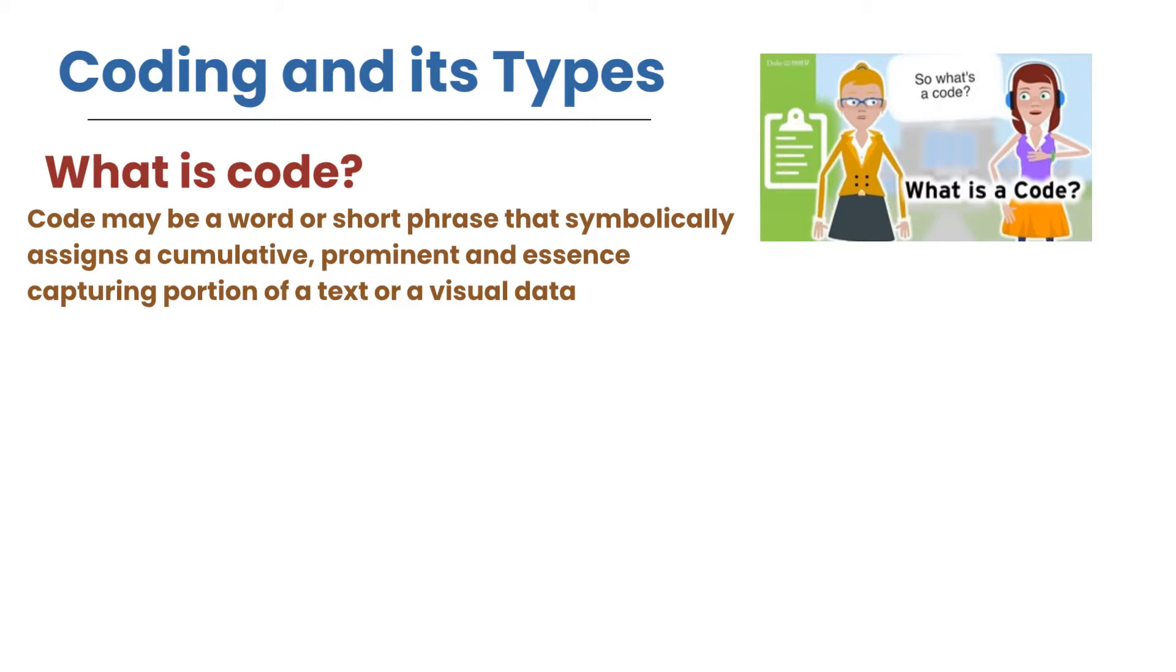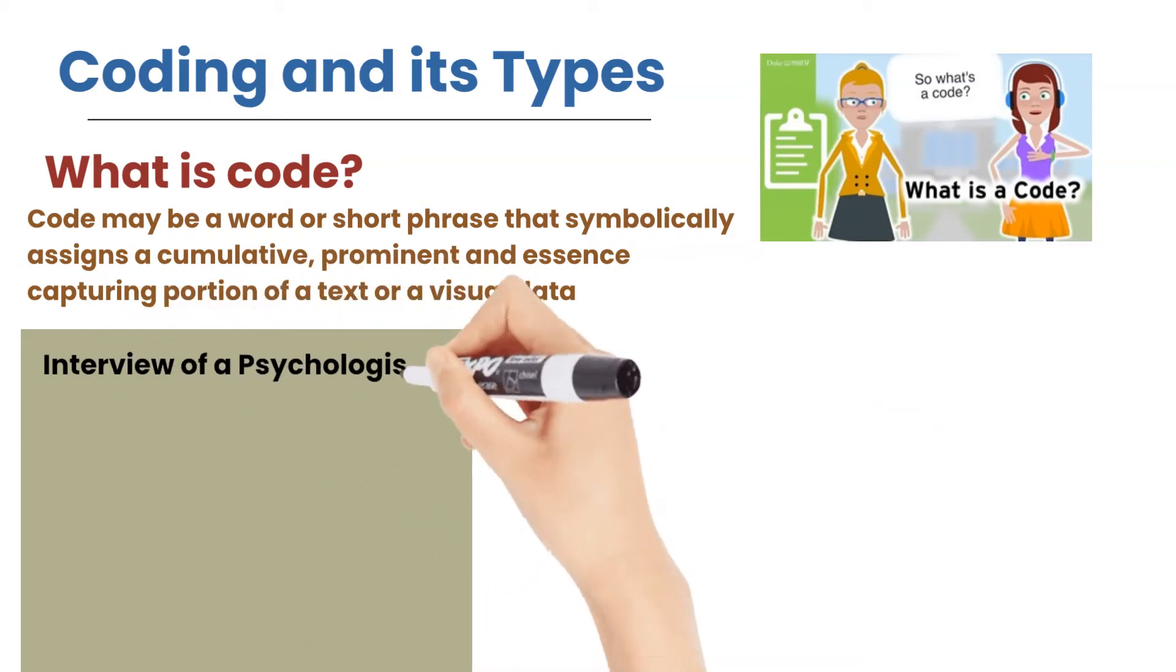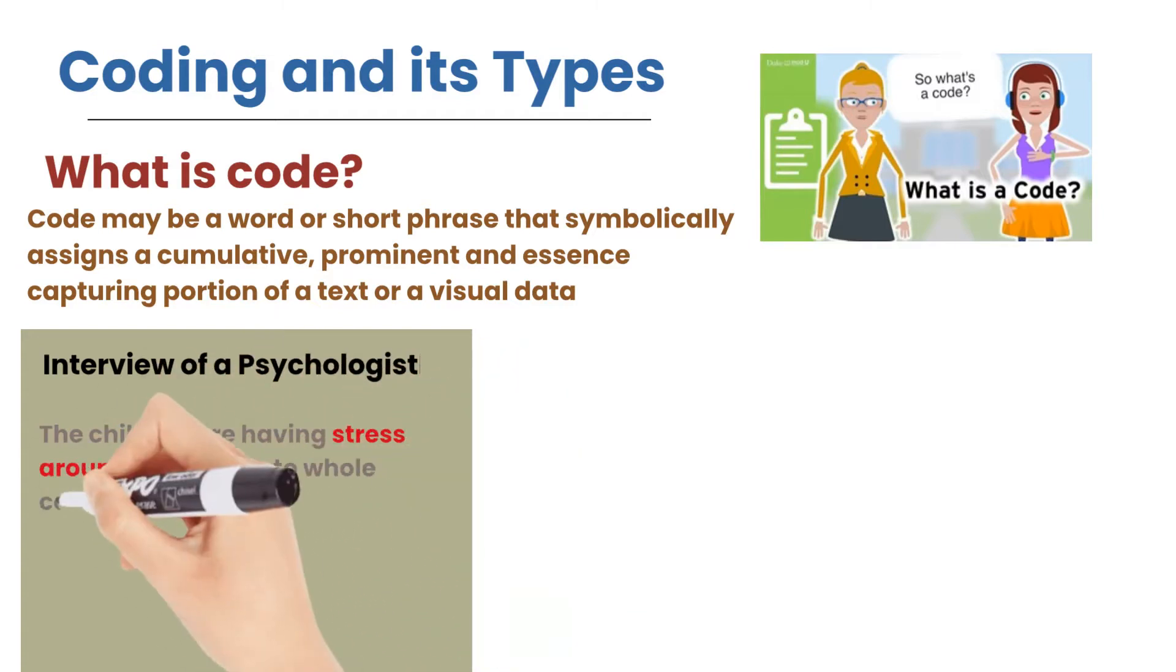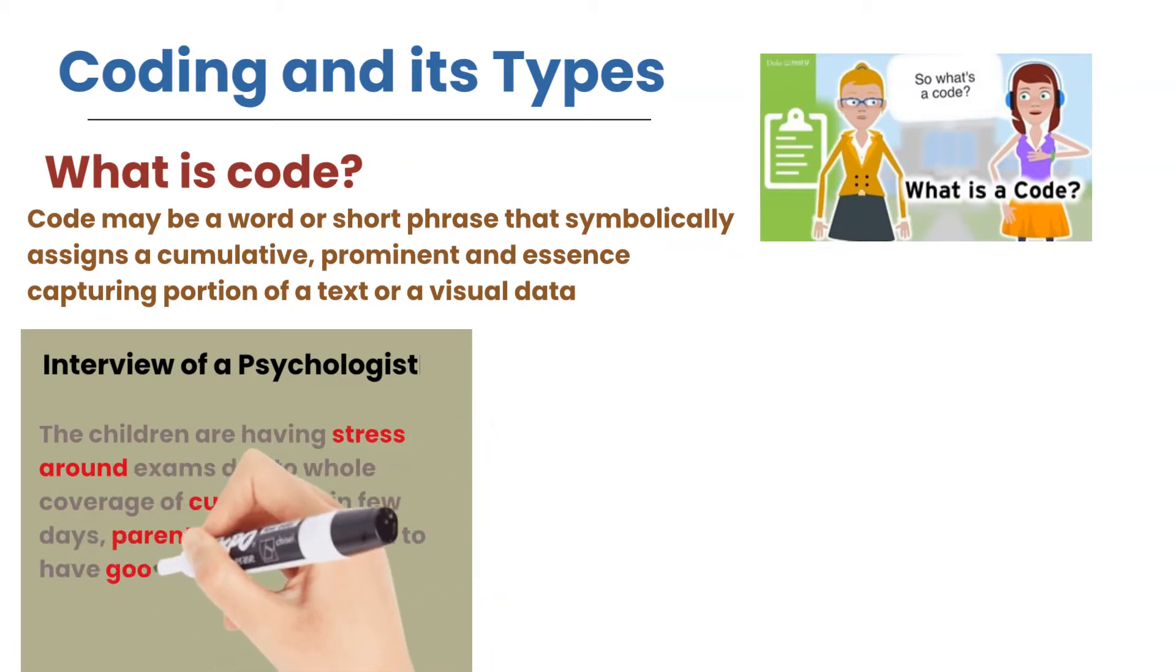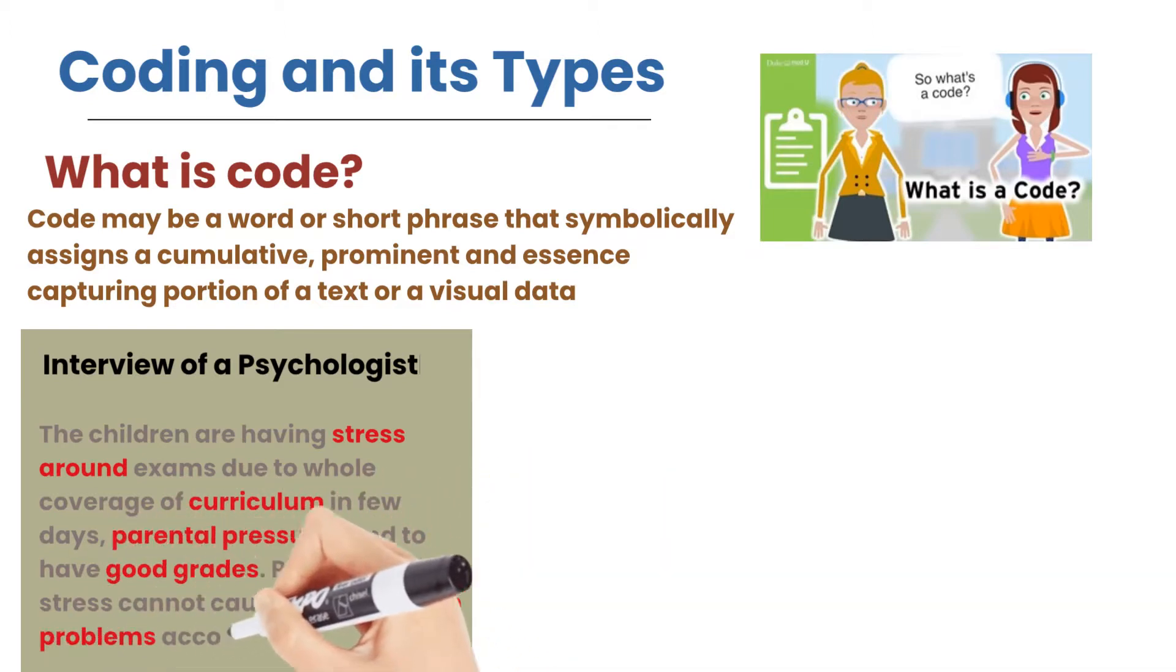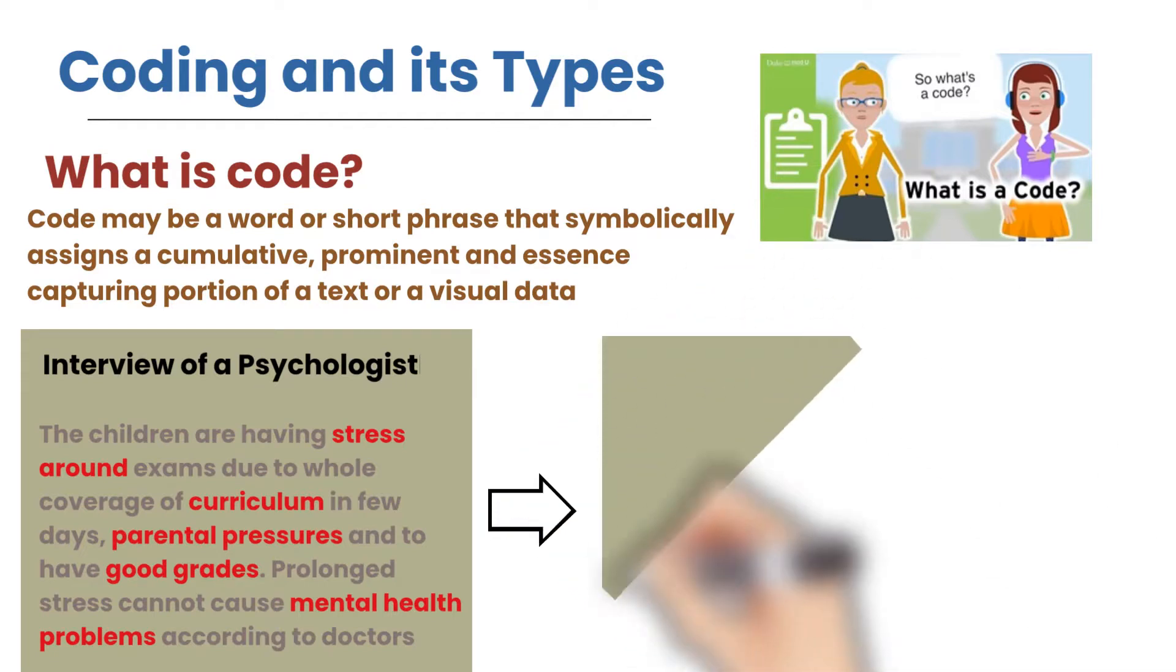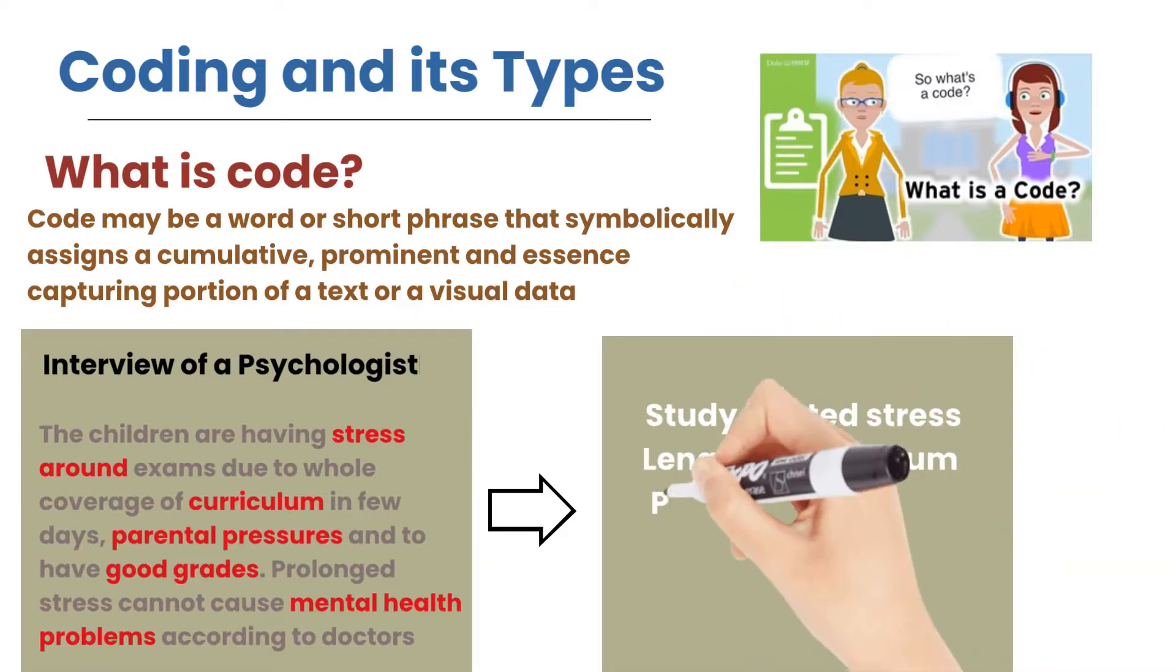See this example for more clarity. This is an interview extract of a psychologist about student study stress. He is saying the children are having stress around exams due to whole coverage of curriculum in few days, parental pressures and to have good grades. Prolonged stress can cause mental health problems according to doctors. So this is an extract of a psychologist. And on the right side you can see that I have extracted all the important chunks and quotes from this extract of interview.